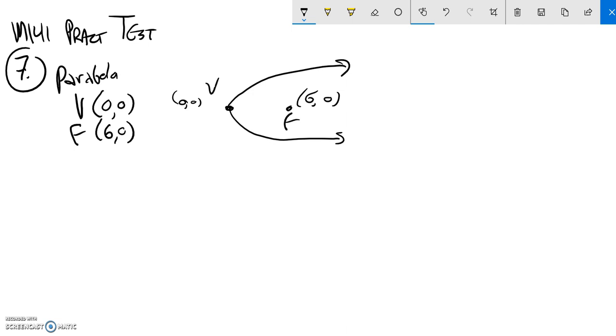So p is six. It's a parabola on its side, so I know that the thing that's squared is going to be y.